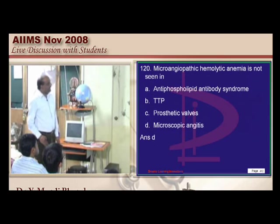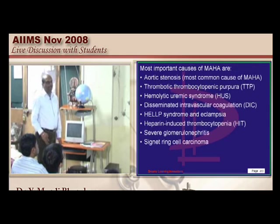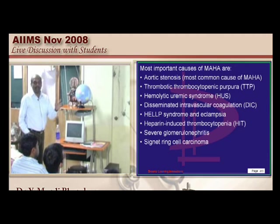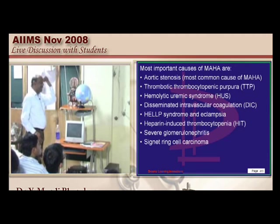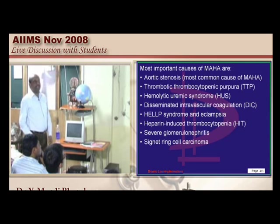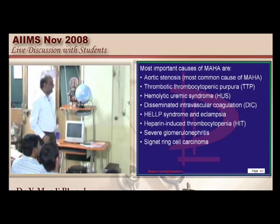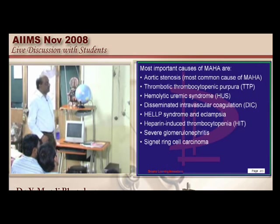Microangiopathic hemolytic anemia can occur with prosthetic valves, TTP, antiphospholipid antibody syndrome, HELLP syndrome in eclamptic patients, and those receiving heparin for a long period. Signet ring cell carcinoma is also among the different causes.